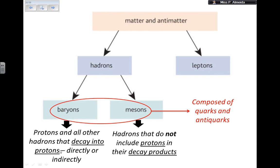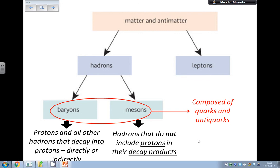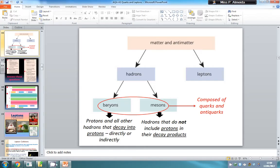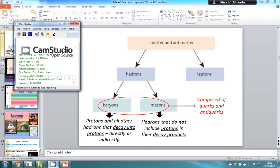Baryons are hadrons where protons appear directly or indirectly in the decay products, or if they are protons already. Mesons are hadrons that do not include protons whatsoever in their decay products. That's all for classifying particles and antiparticles — the next video will be on leptons.